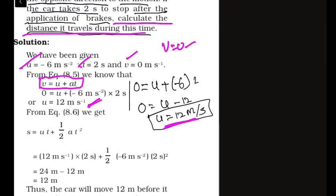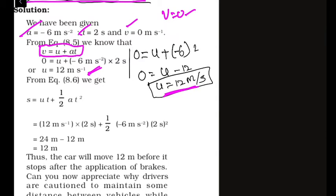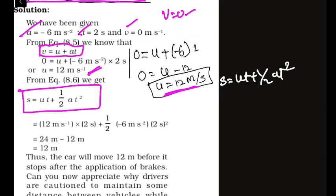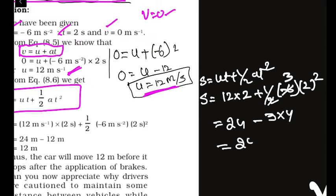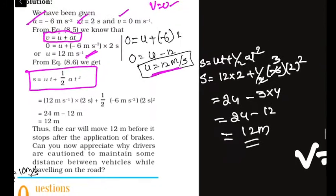Using V = U + AT to find initial velocity: 0 = U + (-6)(2), so U = 12 m/s. Then using S = UT + ½AT²: S = 12(2) + ½(-6)(2²) = 24 - 3×4 = 24 - 12 = 12 meters.